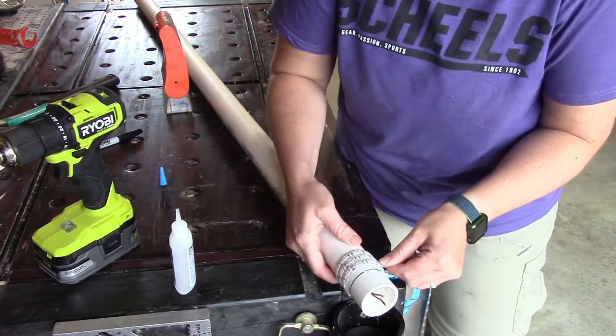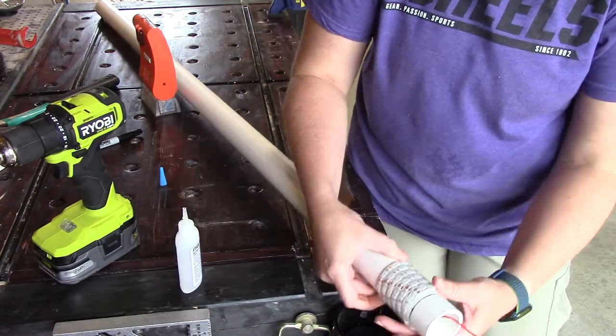Continue wrapping your lights around the PVC pipe, applying CA glue every so often.